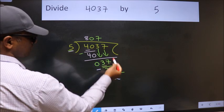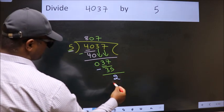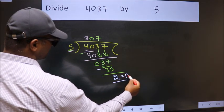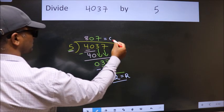No more numbers to bring down. So, we stop here. This is our remainder. This is our quotient.